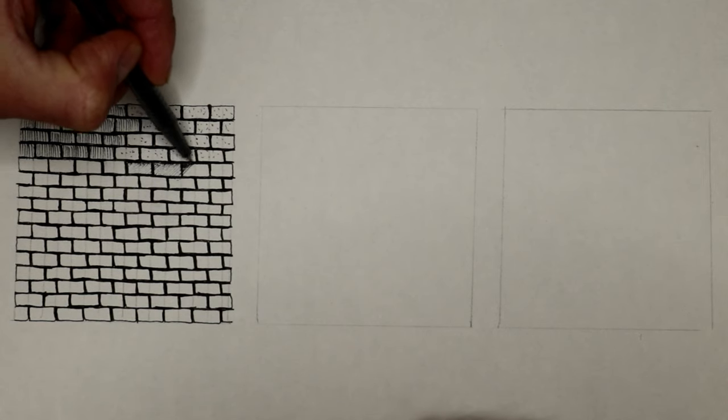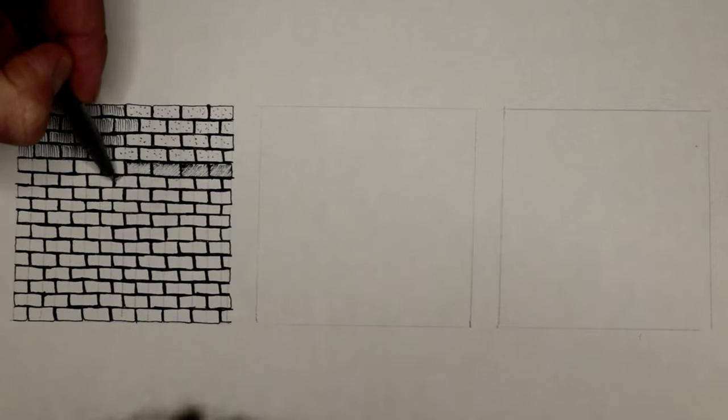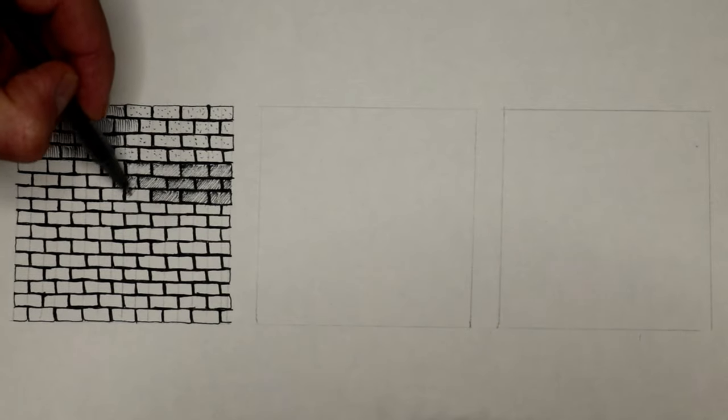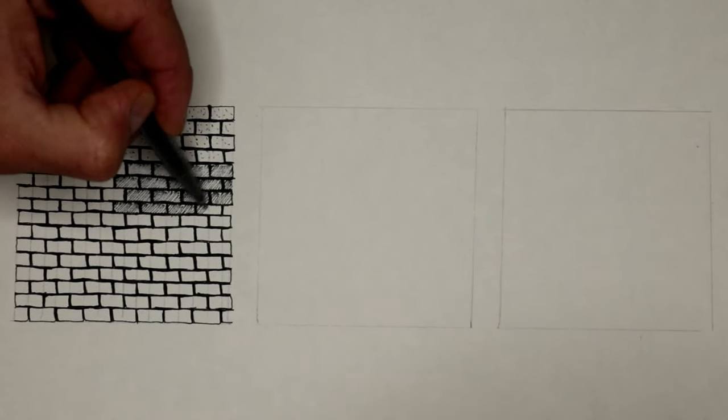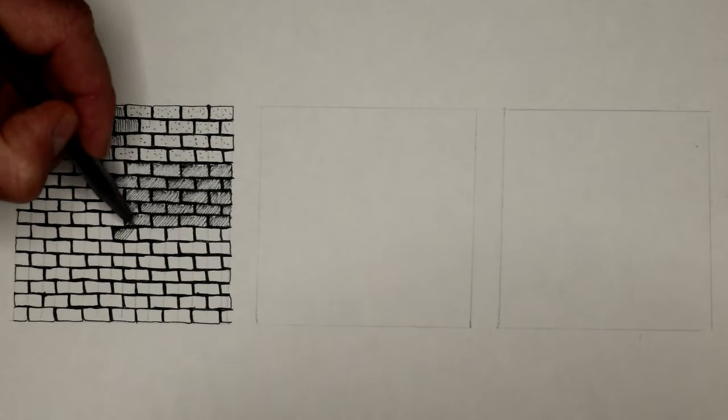You can go diagonal just to give a little bit of shading on the bricks. On your drawings, try to use one style of texture, so if you're going to do diagonal hatching like this, use it for all the bricks.